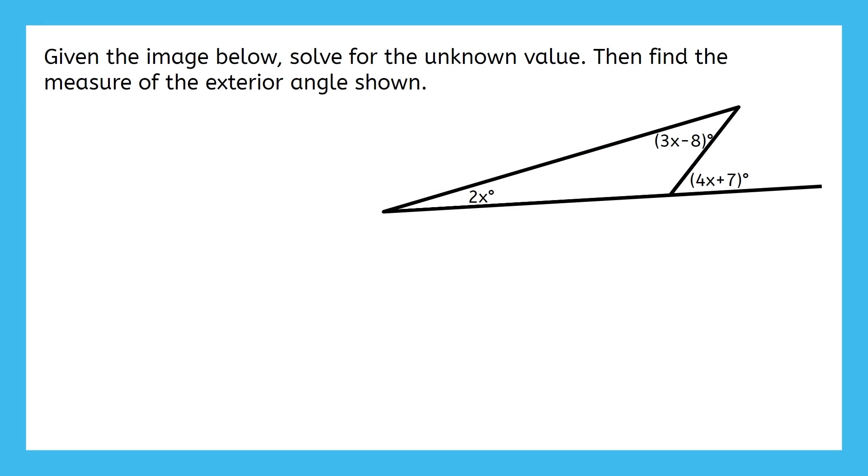This example says, given the image below, solve for the unknown value. Then, find the measure of the Exterior Angle shown. Take a moment to relate this to the Exterior Angle Theorem that we just learned about. Try to set up an equation to represent this. Did you say that these two Remote Interior Angles added up to equal this Exterior Angle?